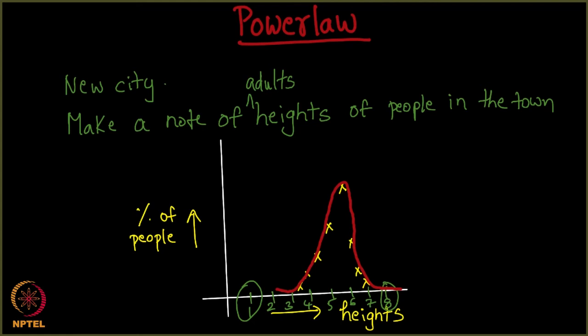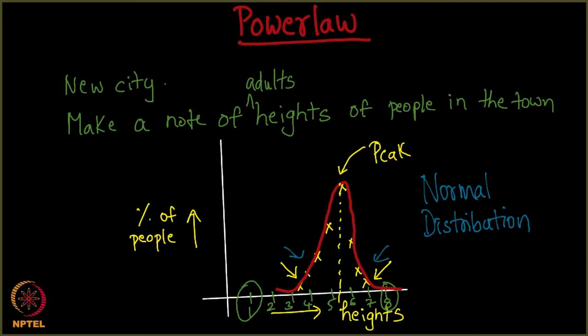So what do we observe? We observe that there are very few people with very, very less height and very few people who are very, very tall, and most of the people are between this. Let's say between 5 and 6 feet. This is where it peaks. Such a distribution is called a normal distribution.